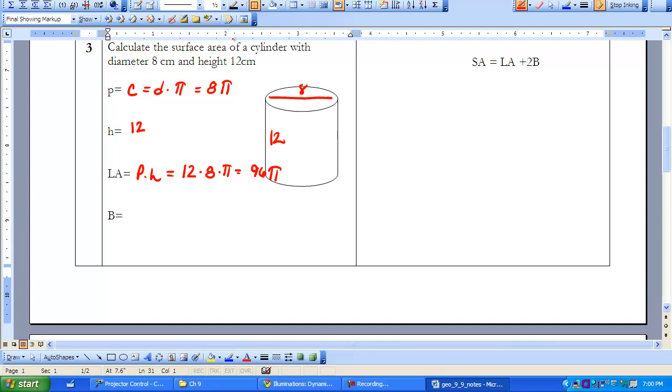Then the area of my base, we know the formula for a circle, the area of a circle is pi r squared. So my radius of this is going to be 4. So I'm going to go 4 squared times pi, so that equals 16 pi. So now I have all the things that I need in order to find my surface area. I have my lateral area, and I have my area of my base.